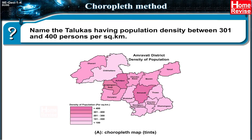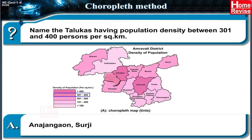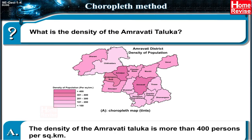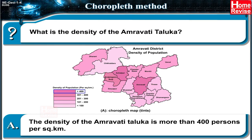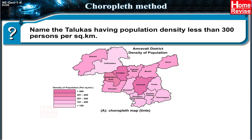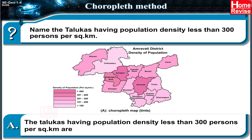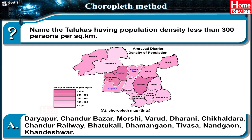Question: Name the talukas having population density between 301 and 400 persons per square kilometer. Question: Name the talukas having population density less than 300 persons per square kilometer. Answer: The talukas having population density less than 300 persons per square kilometer are Daryapur, Chandur Bazaar, Morshi, Barud, Dharani, Chikhal Tara, Chandur Railway, Batukali, Dhaman Gao, Tivsa, Nand Gao, and Khandeshwar.